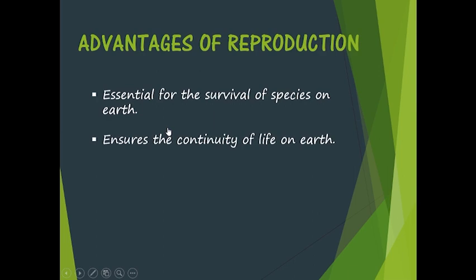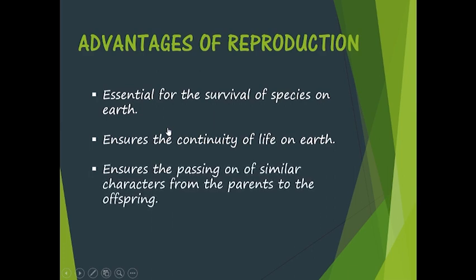The second advantage is it ensures the continuity of life on earth. If all living beings stop reproducing, after perhaps 100 or 200 years when all living beings have died, there will not be any life on earth. So reproduction must happen to keep earth a living planet. The third advantage is that it ensures the passing on of similar characters from parents to offspring — traits are transferred from parent to the next generation. If reproduction stops, these characters will not be transferred.